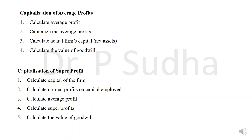Under this method we have two ways in which we can calculate. One is capitalization of average profit, the other is capitalization of super profit. We will see capitalization of super profit in the later part of the video. First we will see how to calculate under average profit.